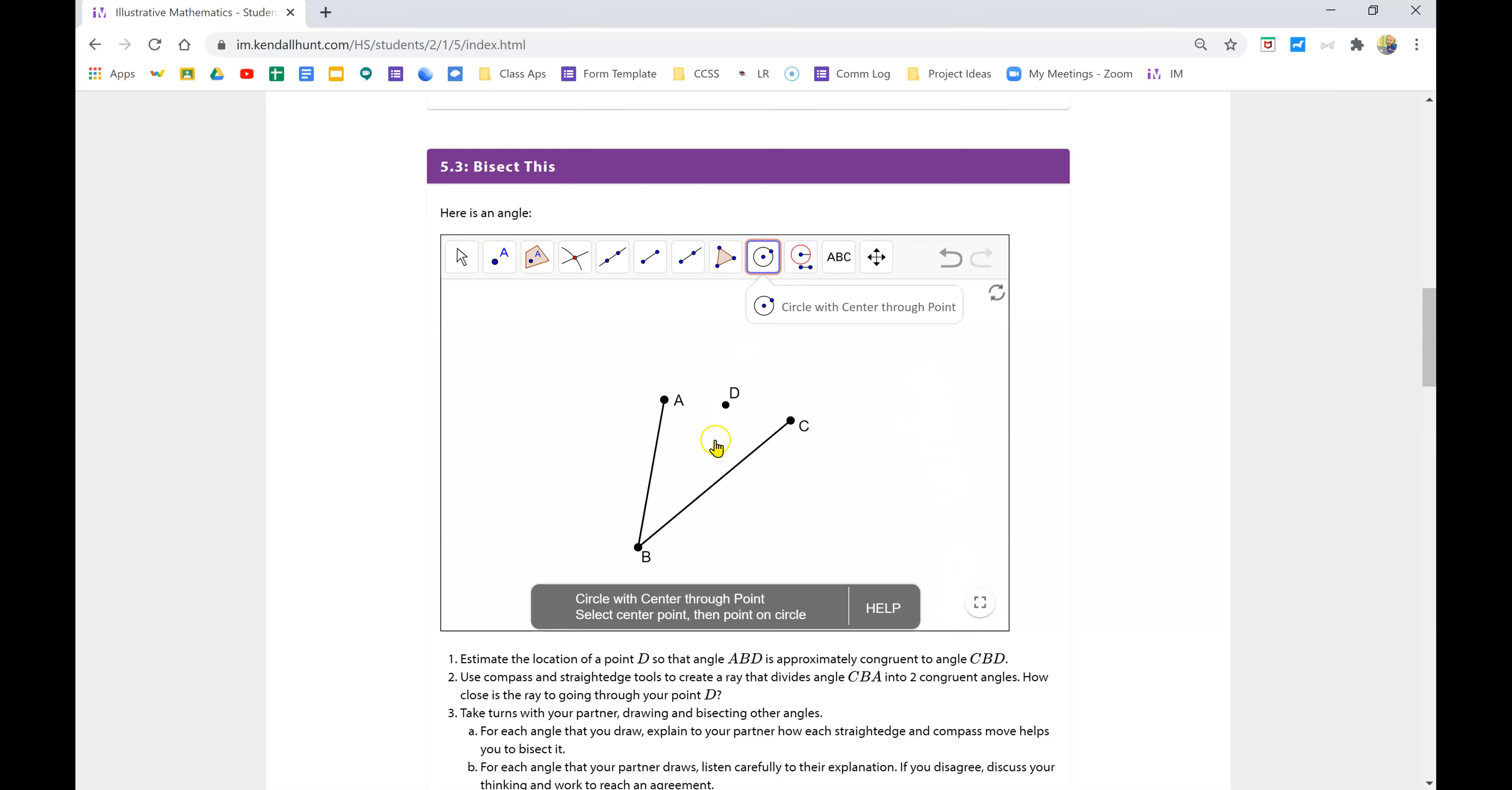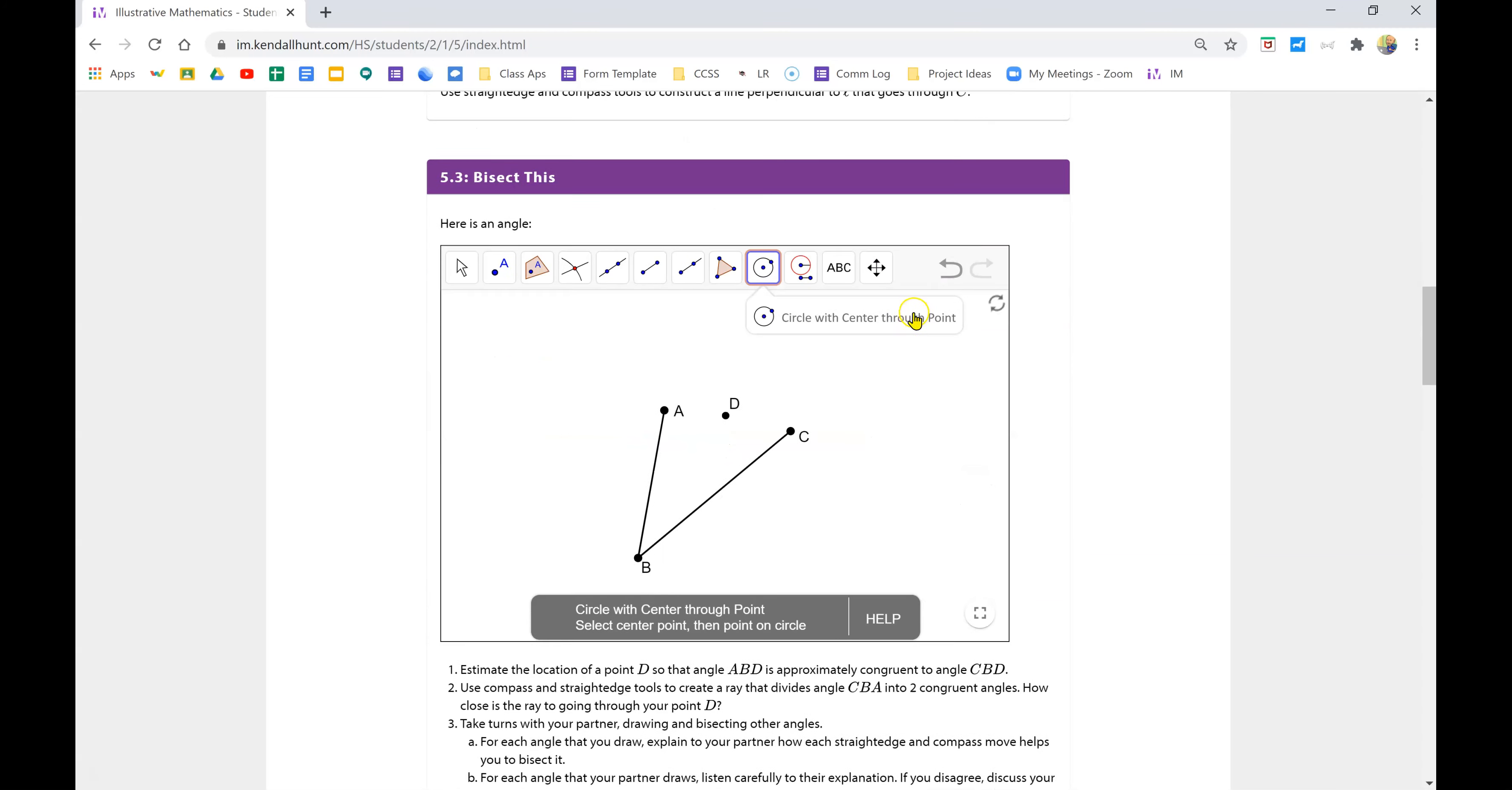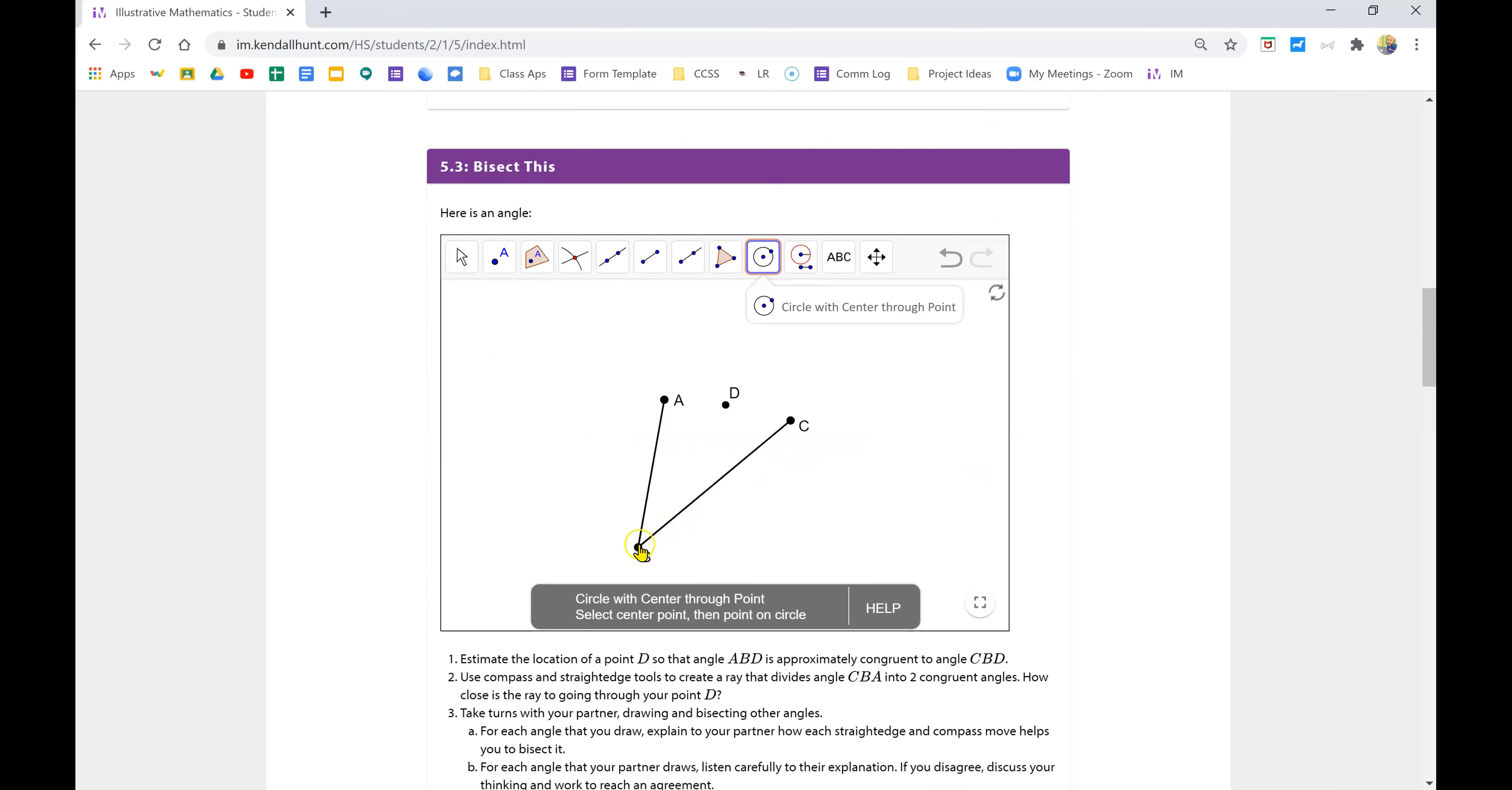First, click on the circle tool and much like the one we just completed with the line, I'm just going to draw some random circle centered at B that comes out here on both sides of the angle and click. Now what I'm doing is creating a point from B to E and from B to this other point. They're going to be the same distance because they're both radius. So I'm going to click on the intersection tool. I'm going to click the circle and this segment here so I can find this other point of the intersection.